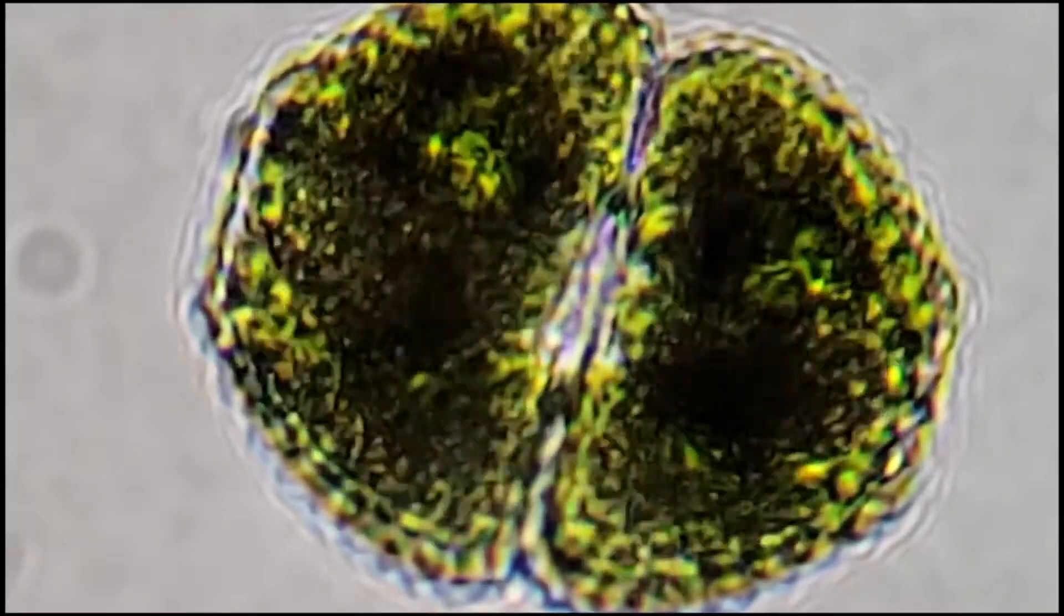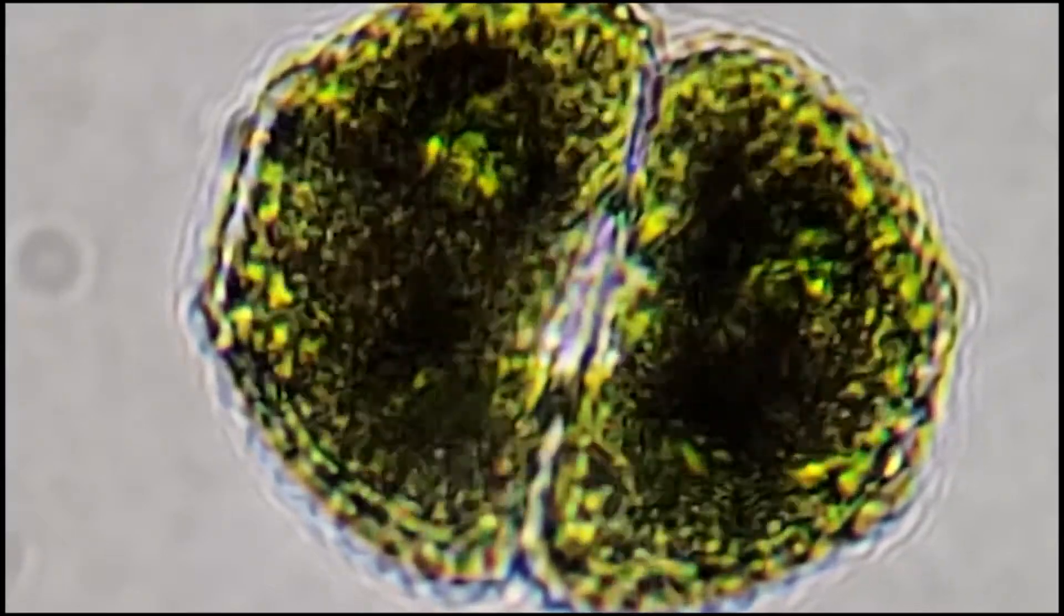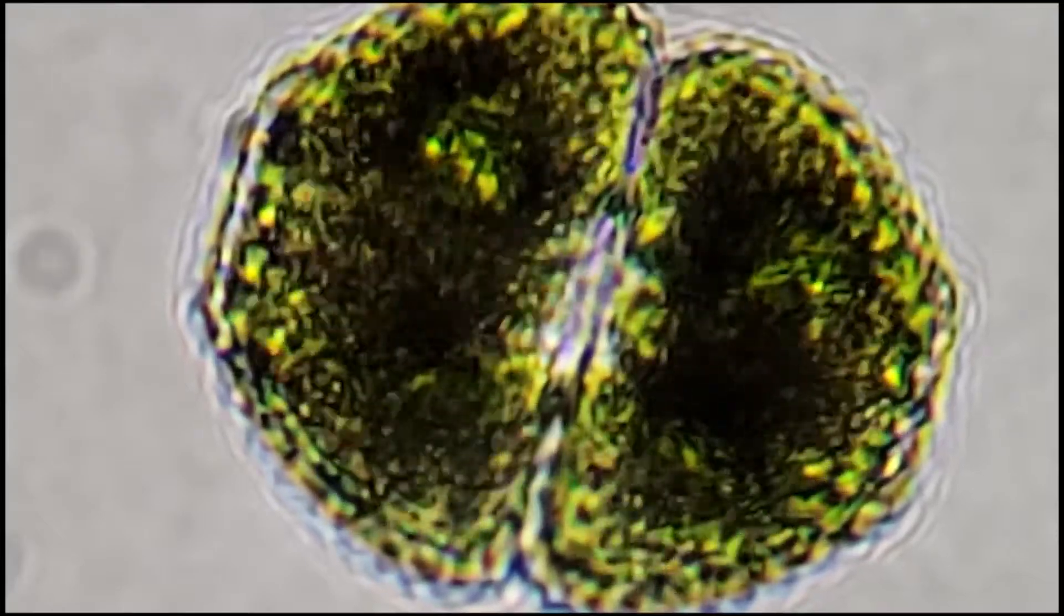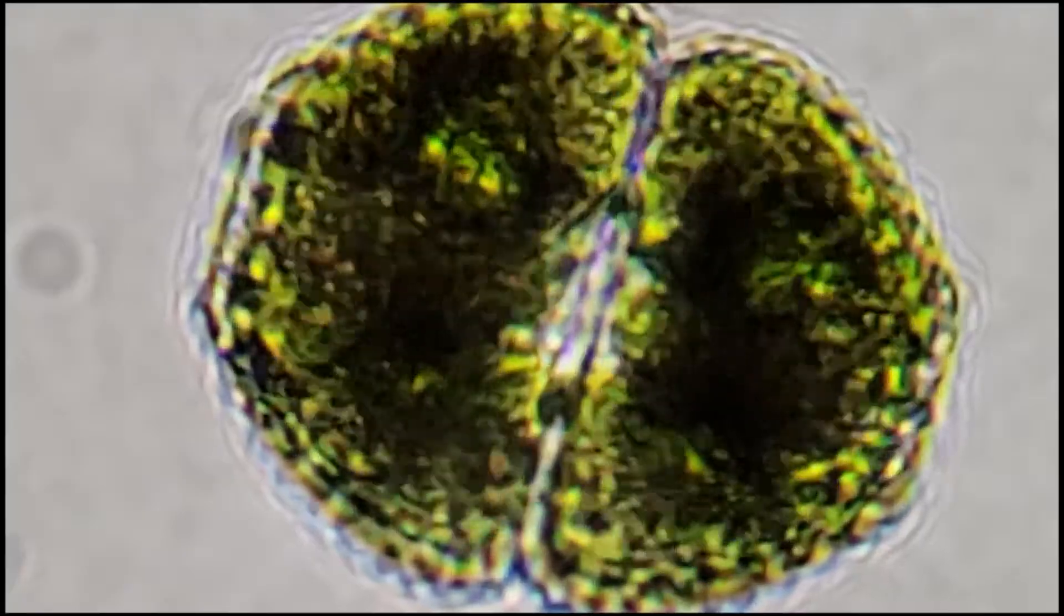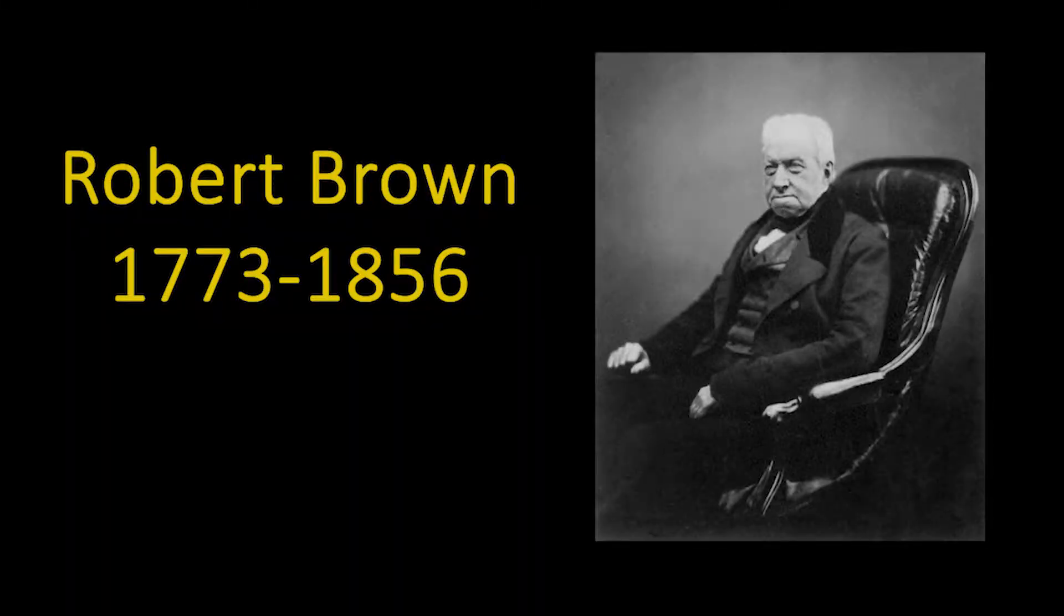Brownian motion is defined as the random motion of particles suspended in a fluid resulting from their collision with the fast-moving molecules in fluid. It gets its name from the botanist Robert Brown, who first described the phenomenon in 1827.